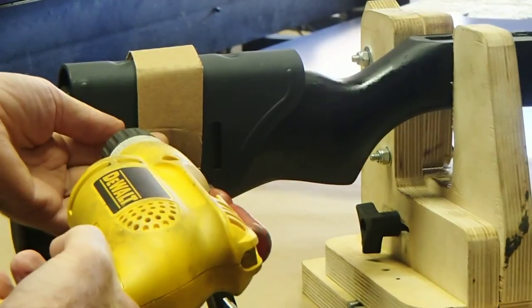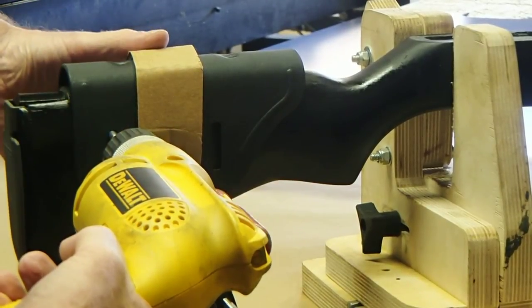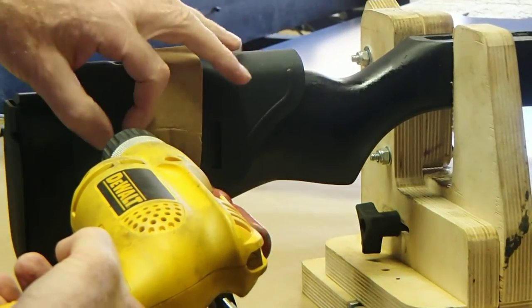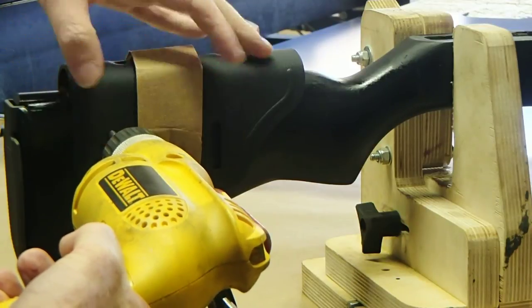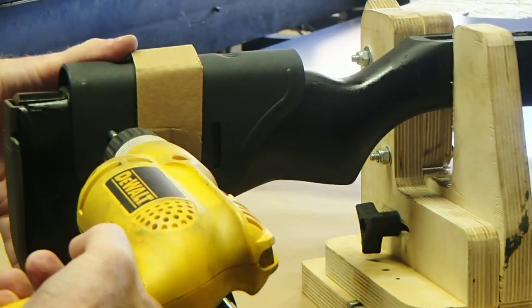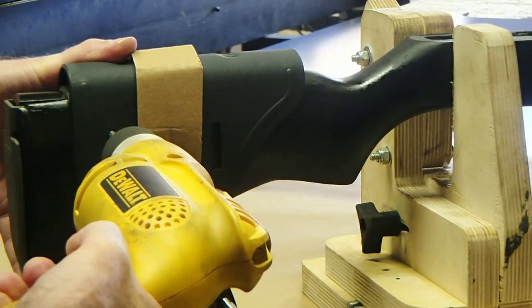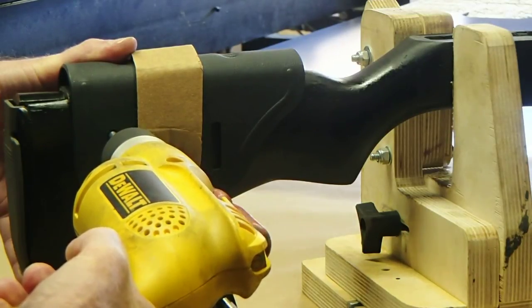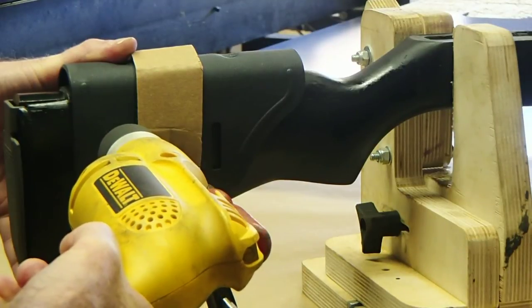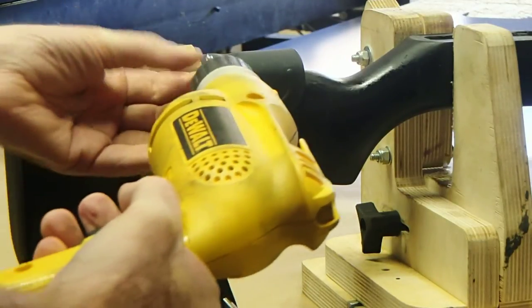So with the three-sixteenths drill bit, you drill halfway into the stock. Again, it's very important to keep the cheek-rest from moving on the stock. So take your time. Just drill all four holes.